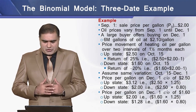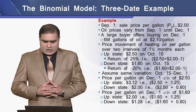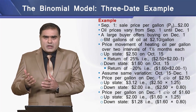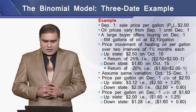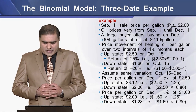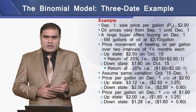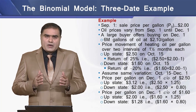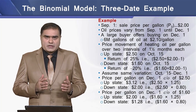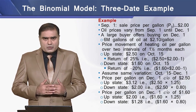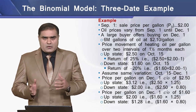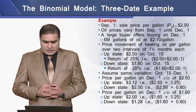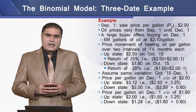We assume the same variation prevails from October 15 to December 1. With reference to the price of $2.50 per gallon, on the upstate side there is a price of $3.12 per gallon with an increment of 25%, and on the downstate side there is a price of $2.00 per gallon with a decrease of 20%. With reference to the price of $1.60, the upstate price will be $2.00 with an increment of 25%, and the downstate price will be $1.28 with a negative return of 20%.